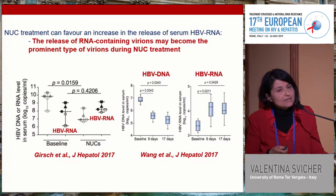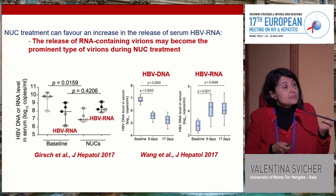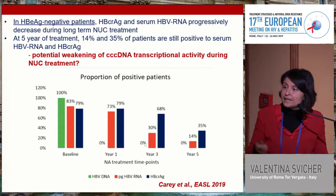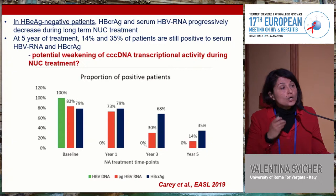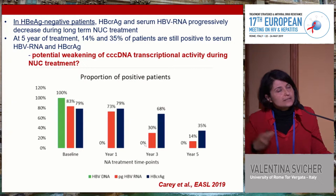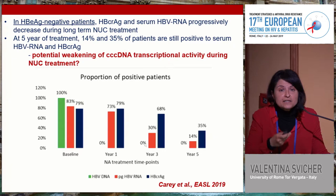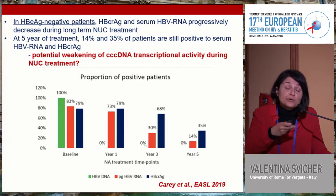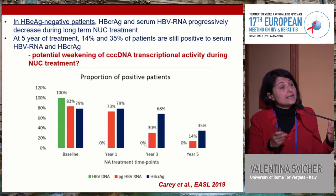This is particularly relevant for serum HBV RNA: by suppressing HBV DNA production, RNA-containing virions become the most prominent type during NUC treatment. A study presented at the last EASL shows that long-term NUC treatment determines a progressive decline in core-related antigen and serum HBV RNA. After five years of treatment, most patients have undetectable levels, suggesting a progressive weakening of cccDNA transcriptional activity.